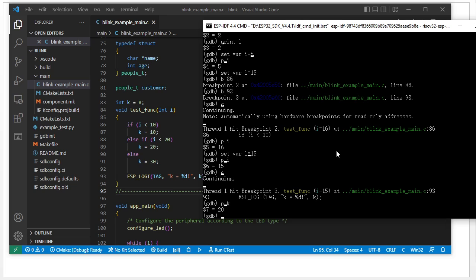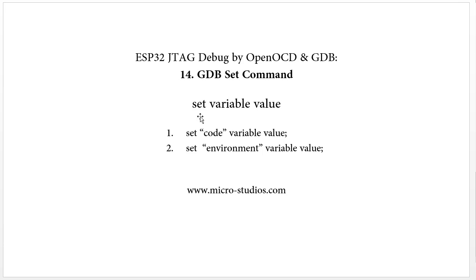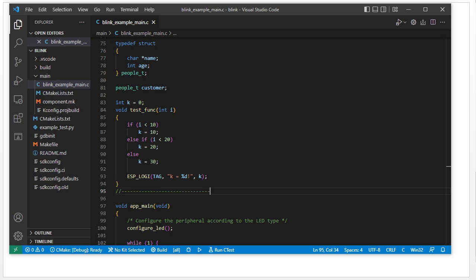This is the first function of the set command: setting the code variable. Now, what is an environment variable and how do we set its value? Let's look at another example.